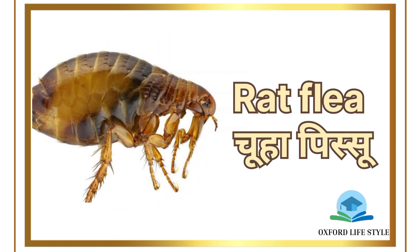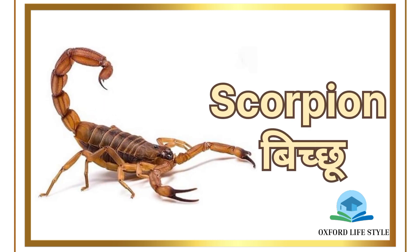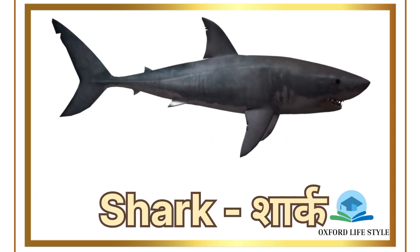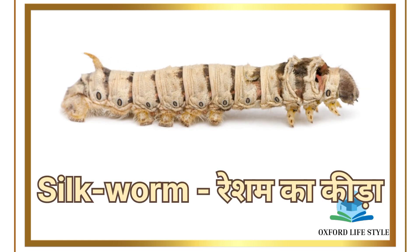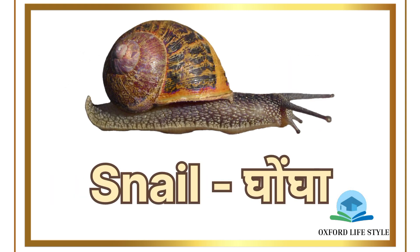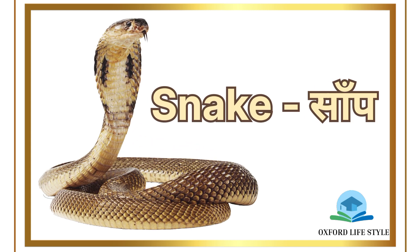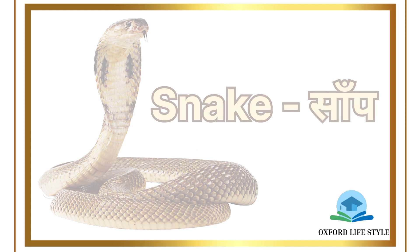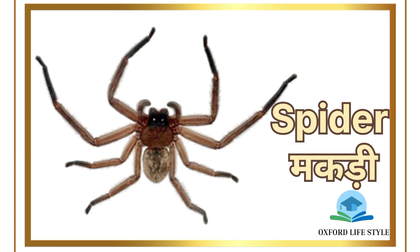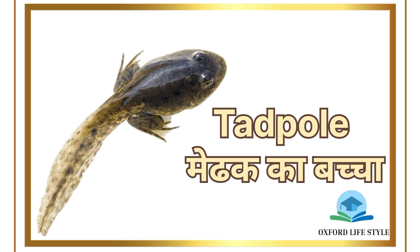Maggot: Ghoonga, Net, Leech, Oyster: Seep, Rat Flea: Chuha Pissu, Scorpion: Bichu, Shark: Shark, Silk, Silkworm: Risham ka Keela, Snail: Ghonga, Snake: Sarp, Spider: Makdi, Tadpole: Medhak ka.